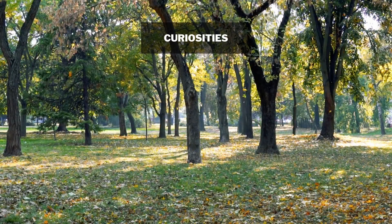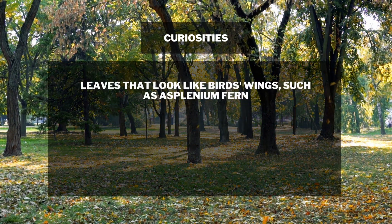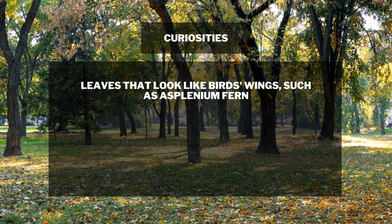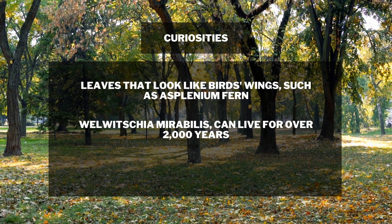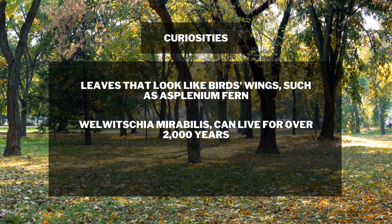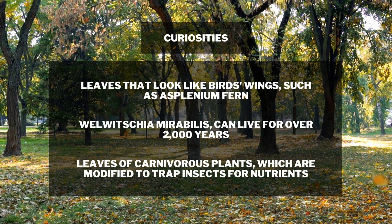Curiosities about the shapes of leaves: Did you know that some plants have leaves that look like birds' wings, like the Asplenium fern? Or that the leaves of the Welwitschia mirabilis plant, found in the Namib desert, can live for over 2,000 years? What about the leaves of carnivorous plants, which are modified to trap insects for nutrients?